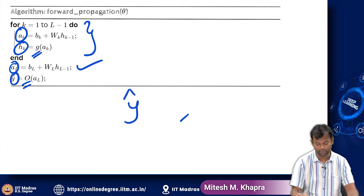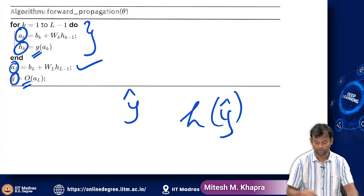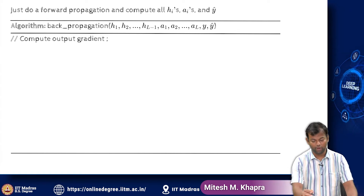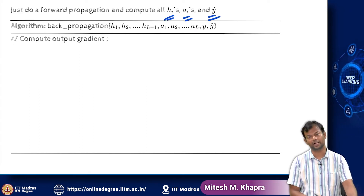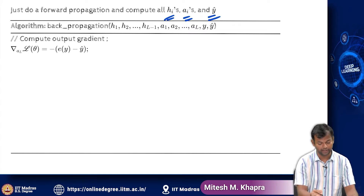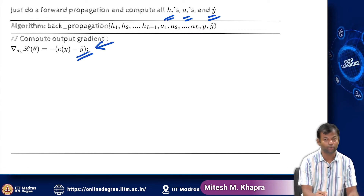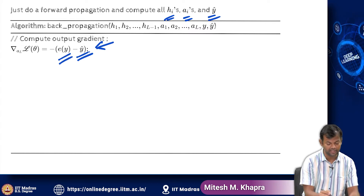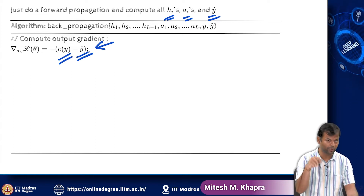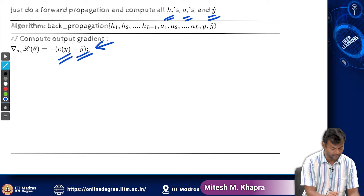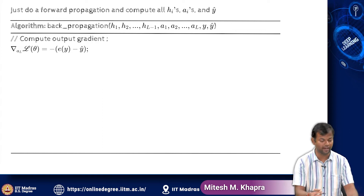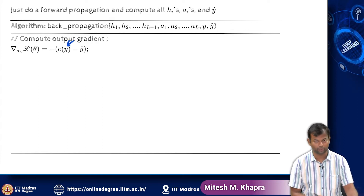Once you do the forward propagation, you have all the h's, all the a's, and the y-hat. Now you start doing the backward propagation. First, you compute the gradient with respect to the output layer using the formula we derived. This depends on y-hat, which you have from the forward pass, and y, which is the one-hot vector with a 1 in the correct class — known from the training data. This entire algorithm is run for one example, one input x, for which you know the y vector.